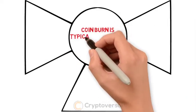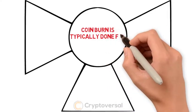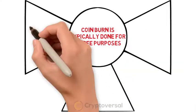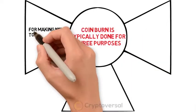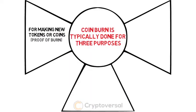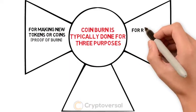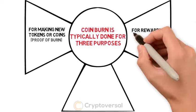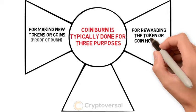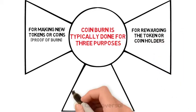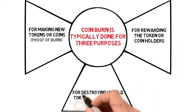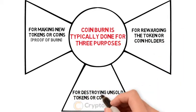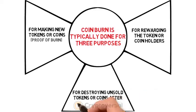Coin burn is typically done for three purposes: for making new tokens or coins via proof of burn, for rewarding the token or coin holders, and for destroying unsold tokens or coins after an ICO or token sale.